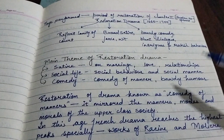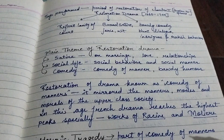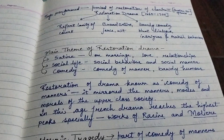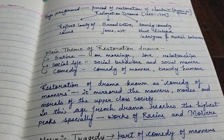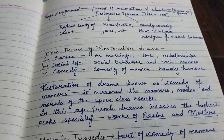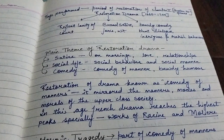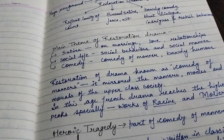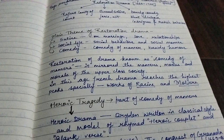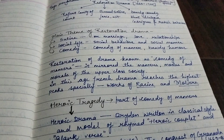The main theme of Restoration Drama is usually satire on topics like marriage, love, and relationships — used as a mocking theme in the play. Their social behavior reflects 16th and 17th century manners, and the social manner of people of the upper class of society. Usually these dramas were written in the form of comedy of manners and bawdy humor — meaning blunt satire. Restoration Drama, or comedy of manners, mirrors the manners, moods, and morals of the upper class of society. This age is the age of the drama.